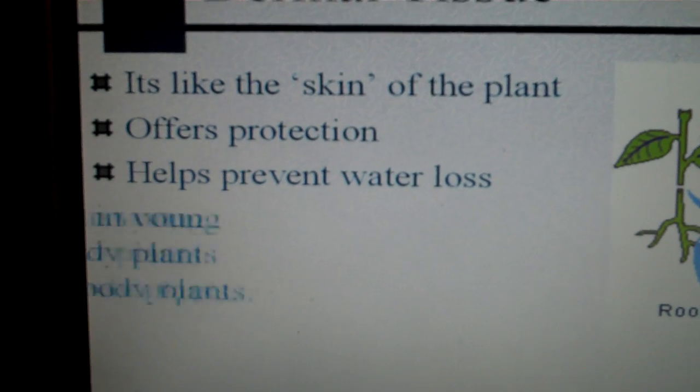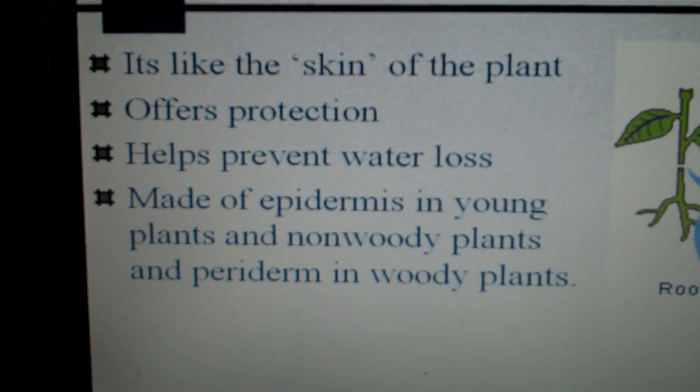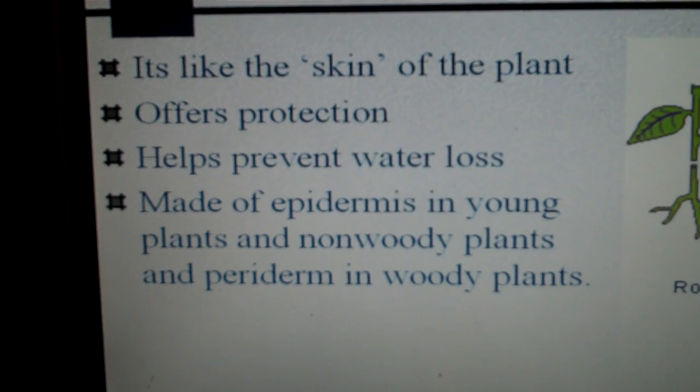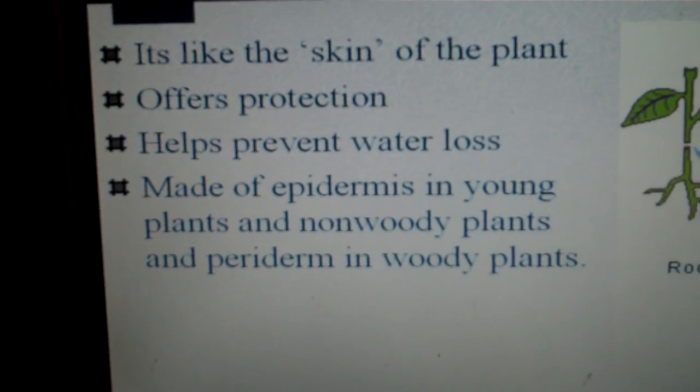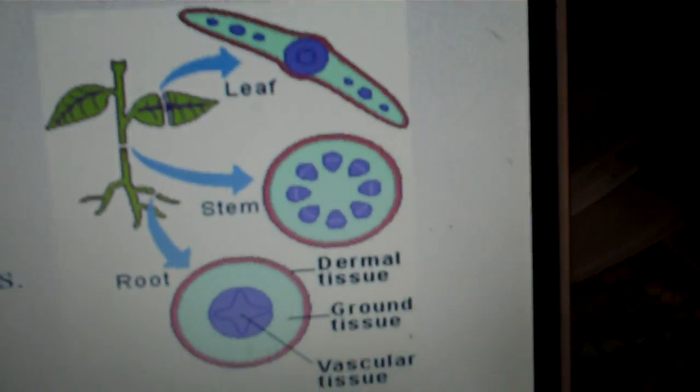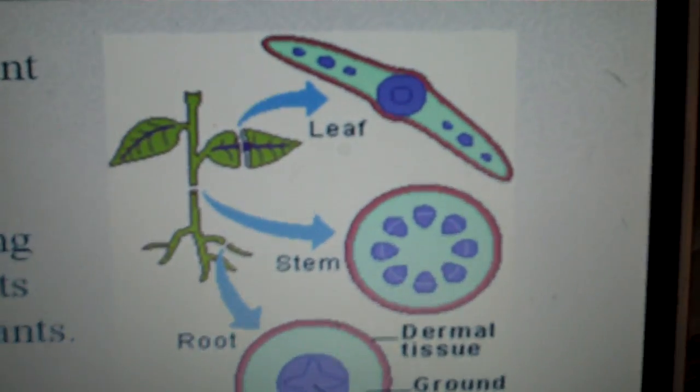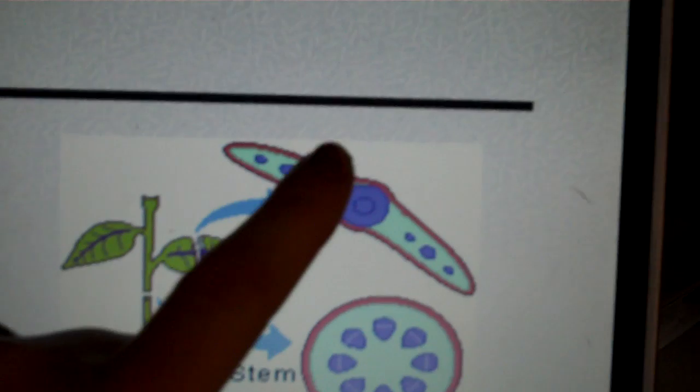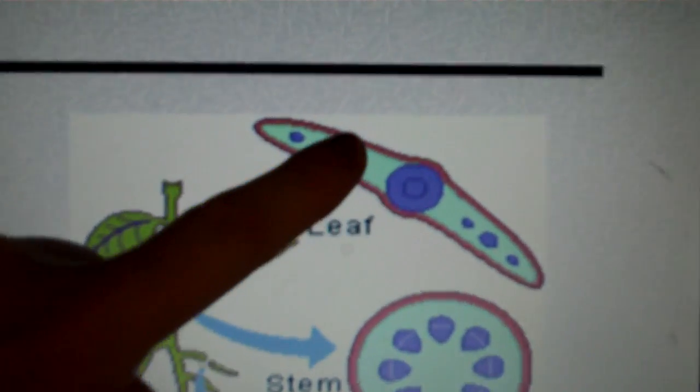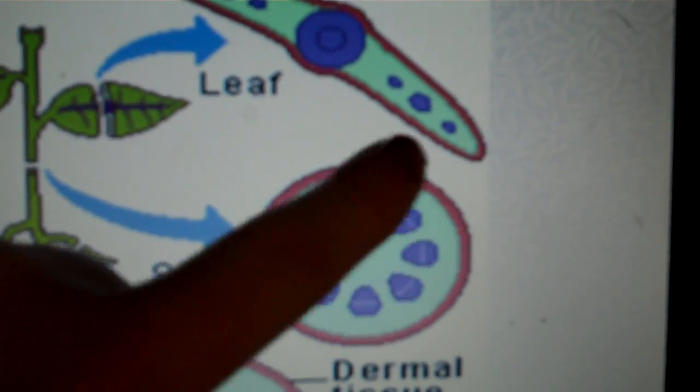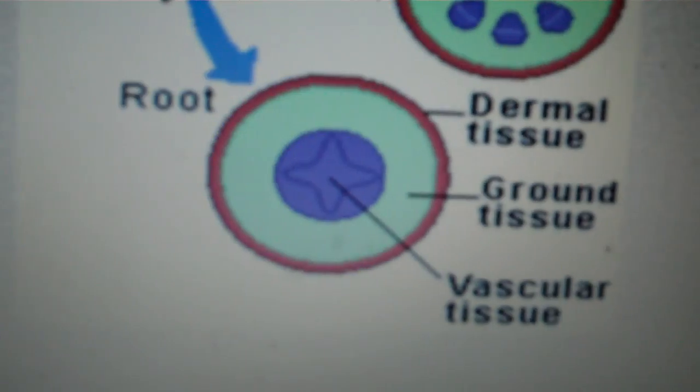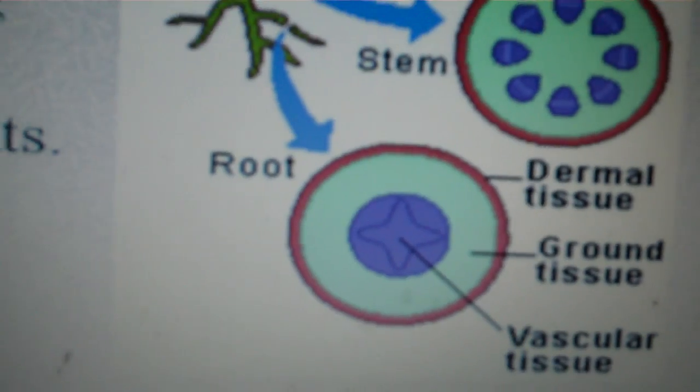It helps prevent water loss and it's made up of epidermis in young plants and also in non-woody plants, and periderm in woody plants. If we look here at this picture, if you look at the leaf, the dermal tissue would be the outside part of the leaf here located in the red color. In the stem it's on the outside part here in red, and then again in the root is the red part on the outside.